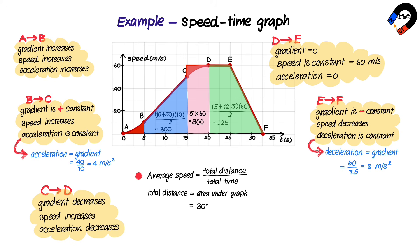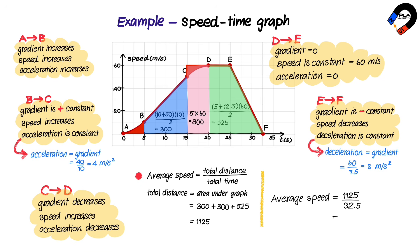The total area under the graph is 300 plus 300 plus 525, which equals 1125. Therefore, the total distance moved is 1125 meters. The average speed is equal to 1125 divided by 32.5, which equals 34.6 meters per second, rounded to three significant figures.